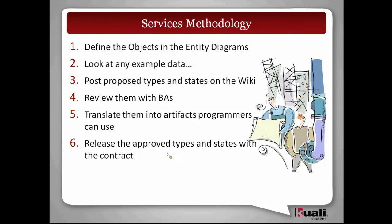We start throwing out types and saying well, this is an object — what are its types? We start throwing out things like that, sometimes documenting them on the diagram, sometimes not. Once the entity diagram gets frozen and solidified, we start creating the operations around them, building the contract. We then have to go back and say we need to put in the types and states somewhere, so we often go back and look at example data.